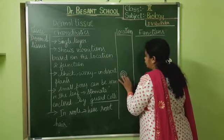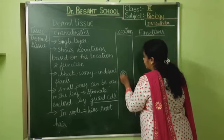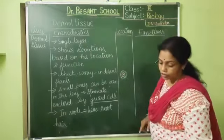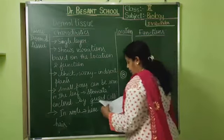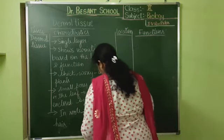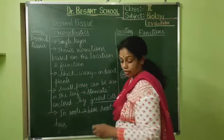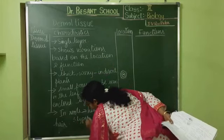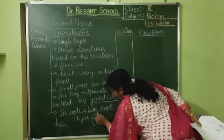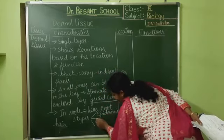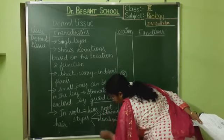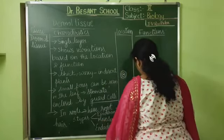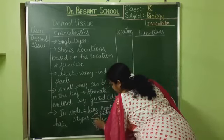The outermost region is the epidermis, the middle one will be the mesodermis, and the innermost one will be the endodermis. So it has three types — outer, middle, and inner. The three types are: epidermis, mesodermis, and endodermis. The location of the dermal tissue: it is present as the outermost layer of all plant parts.